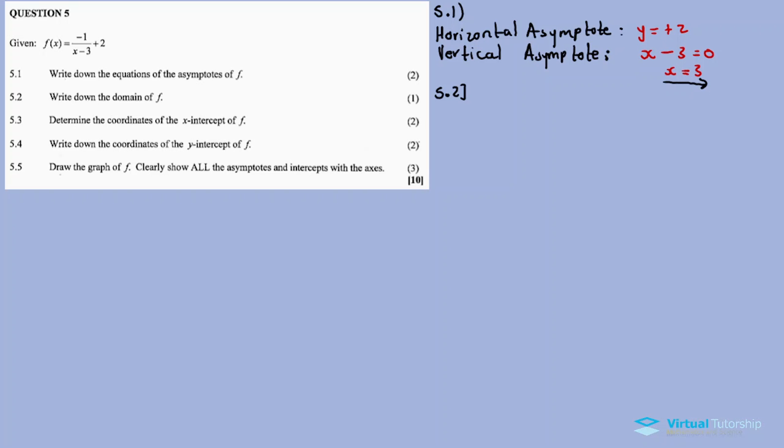5.2: the domain of F. The domain of a hyperbolic function - let me discuss the domain in detail. The domain for a hyperbolic function is x is an element of real numbers where you exclude the vertical asymptote.